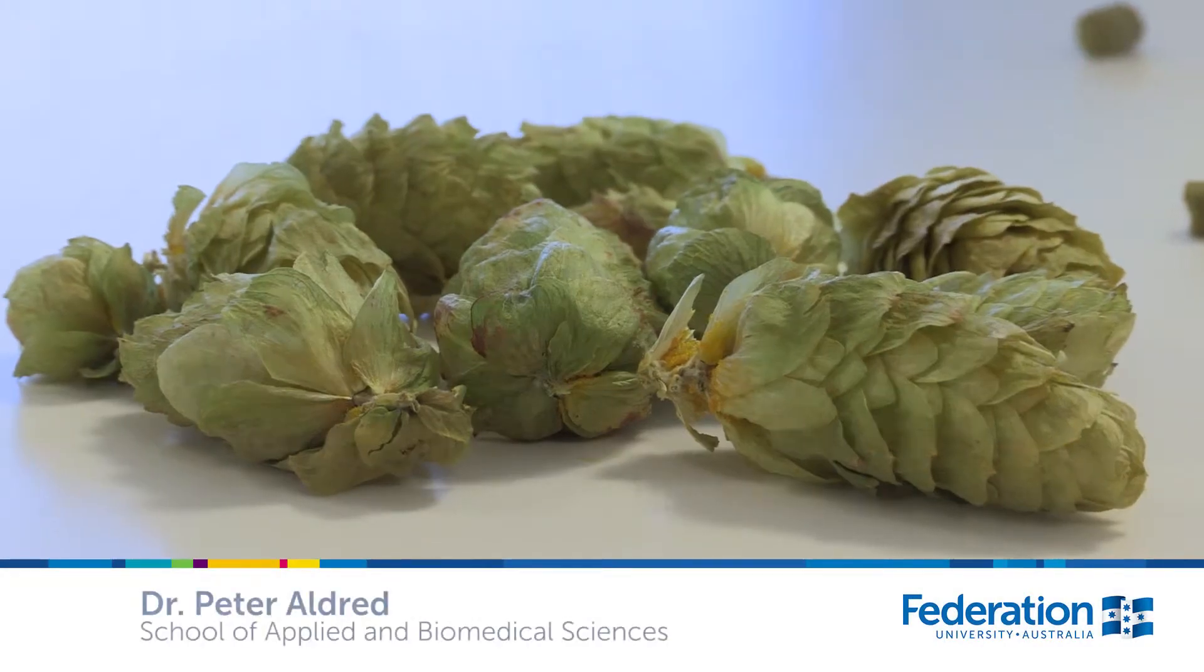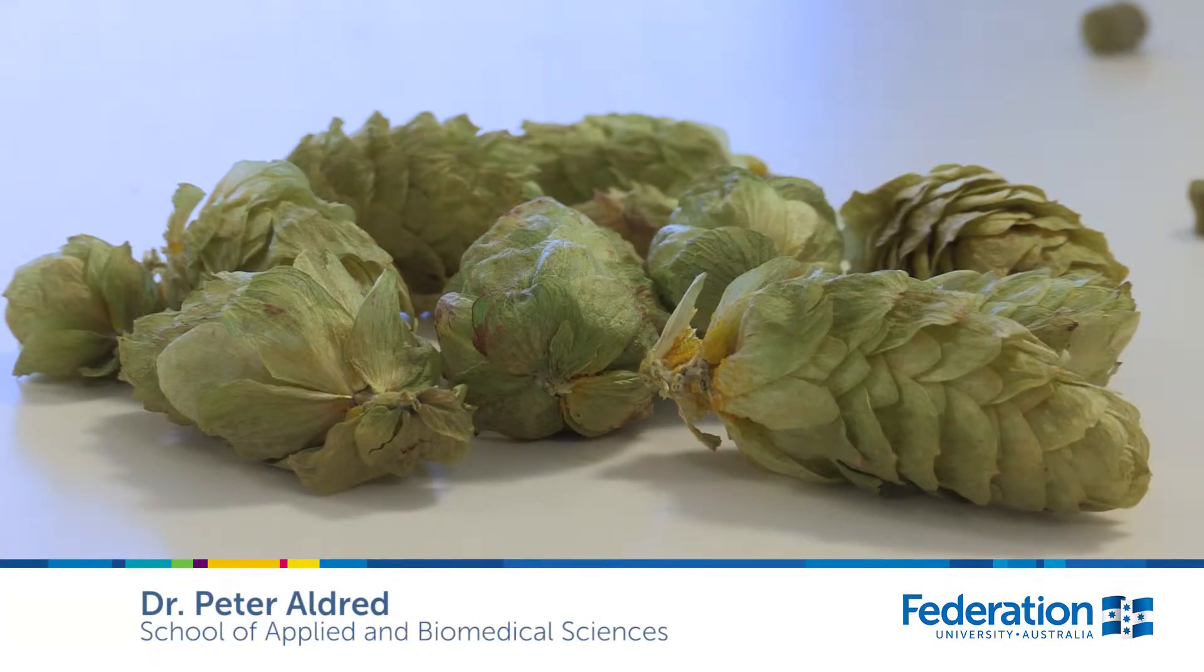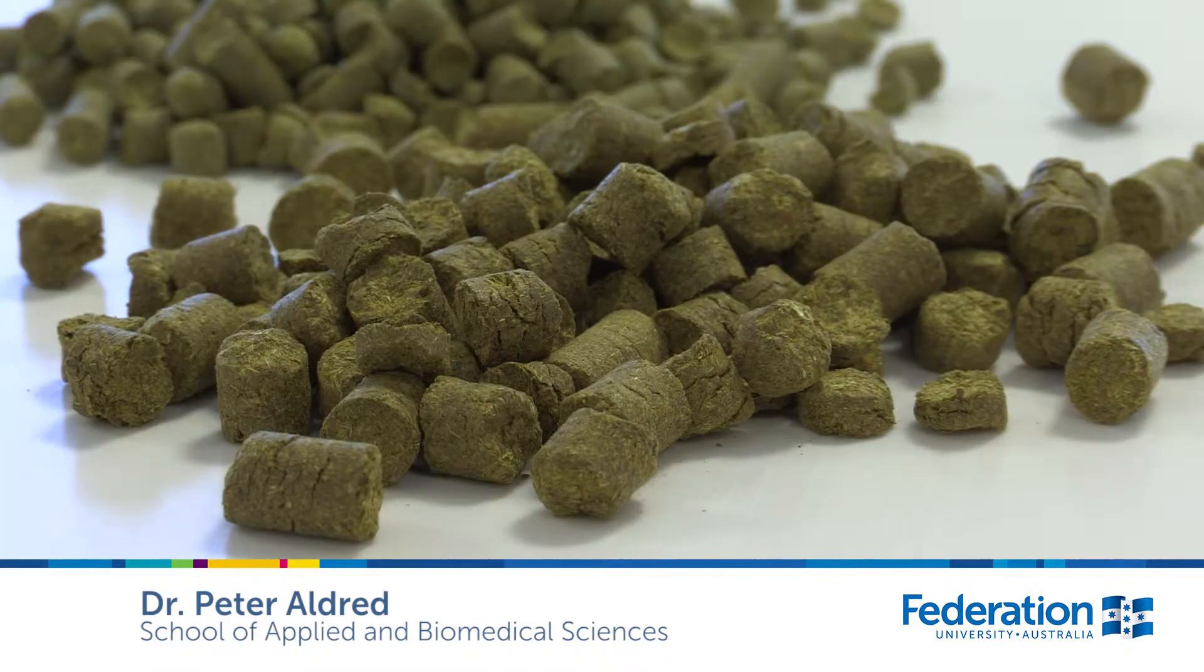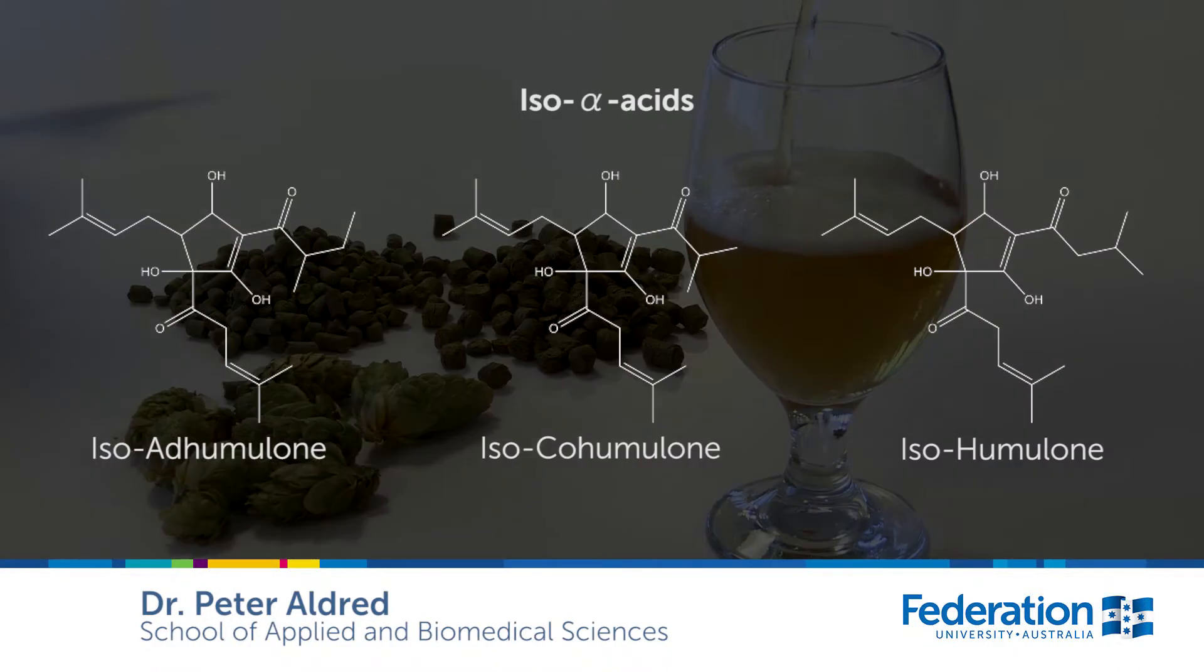The bitterness of beer is predominantly derived from hops used in the brew house and from any addition of hop extracts used during downstream processing. It's the iso-alpha acids from the hops that are the major source of bitterness.